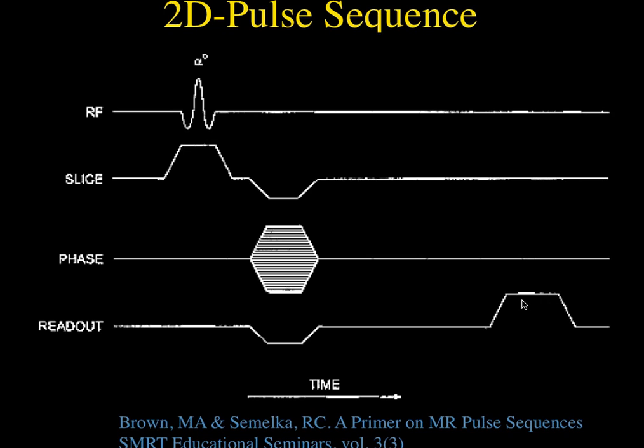The time of echo, TE, is measured from the center of the RF pulse to the center of the readout gradient. This uses a standard 2D Fourier transform technique. The slices with this technique are usually not right next to each other because you get cross-talk between slices — they're usually separated, so you typically have like a three-skip-0.5 or five-millimeter skip-type sequences.